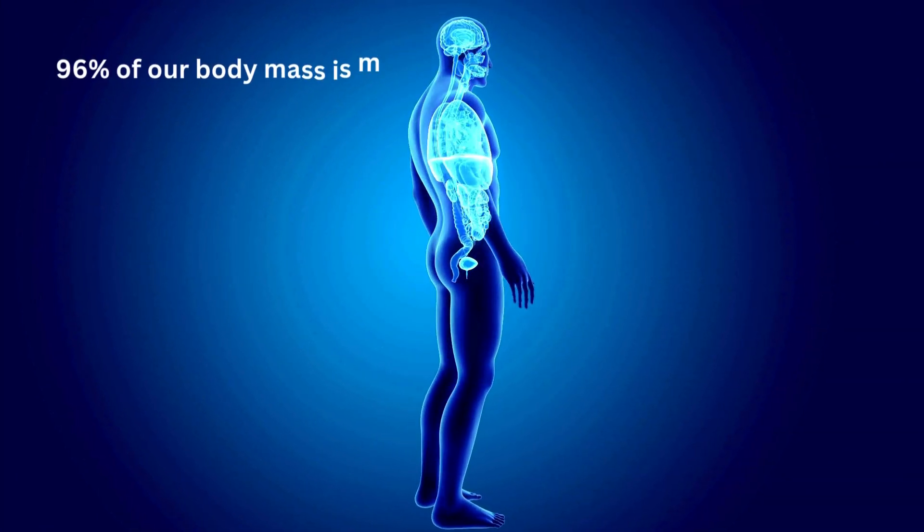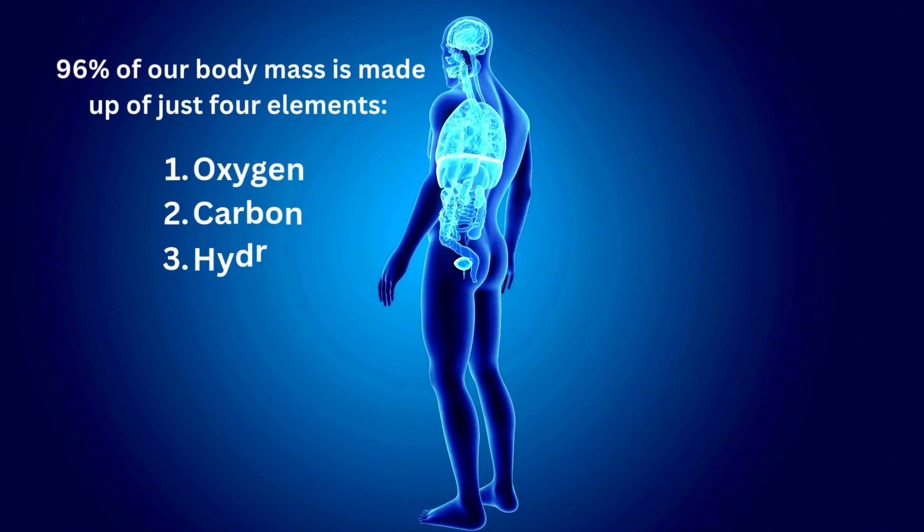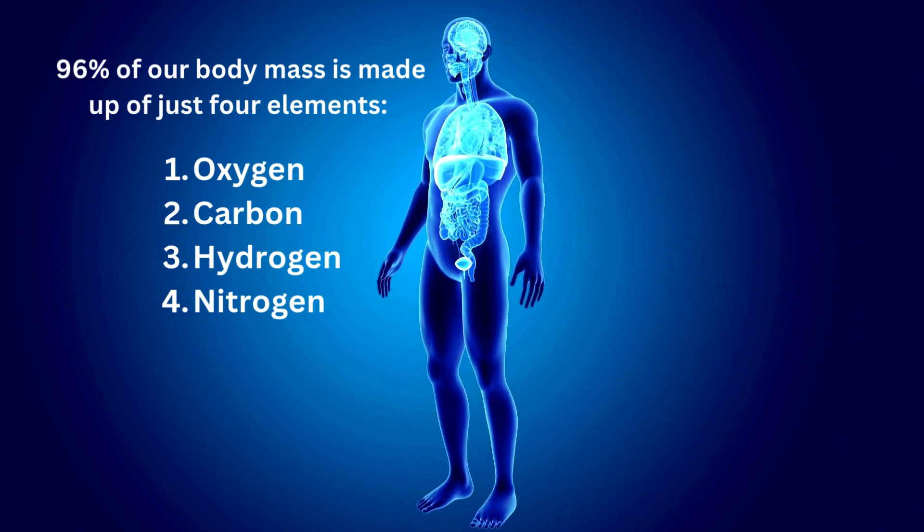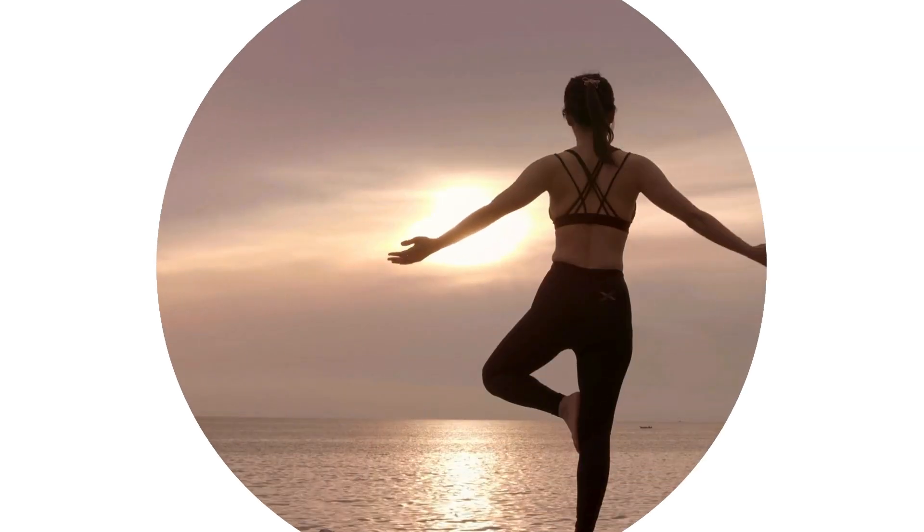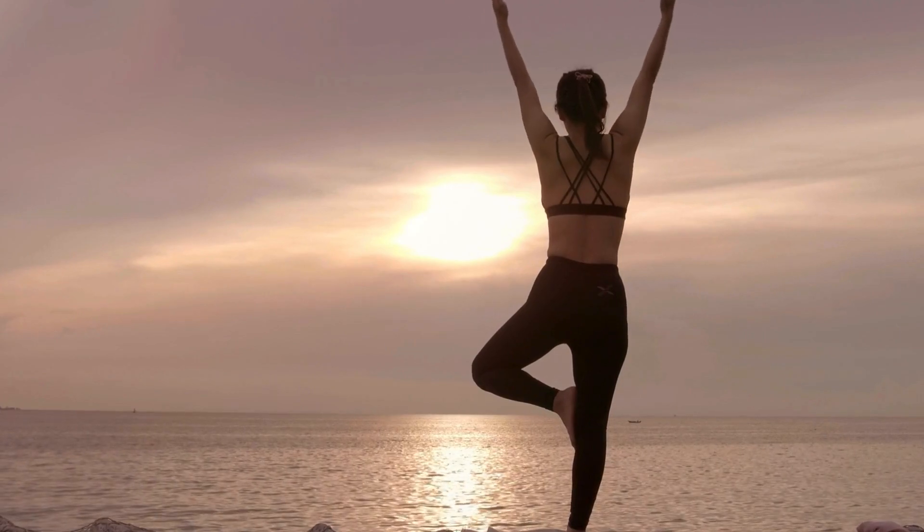About 96% of your body mass is made up of just four elements: oxygen, carbon, hydrogen, and nitrogen. Iron is present as a trace element in the human body, meaning it is a very small percentage of the body's composition, but plays a vital role.